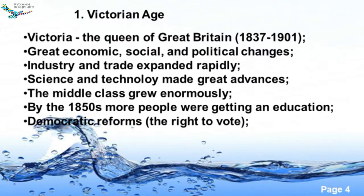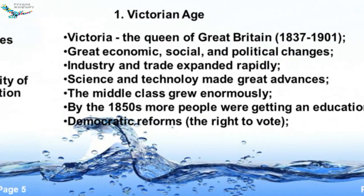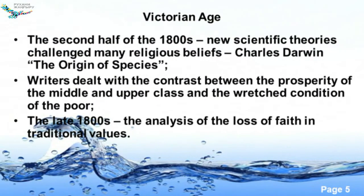By the middle of this period, more people were getting an education and there appeared some new democratic reforms. As for the second half of the 1800s, it is specified with new scientific theories that came into contradiction with many religious beliefs. The example can be Charles Darwin and his book The Origin of Species. As for the literature, writers dealt with the contrast between the prosperity of the middle and upper class and the wretched poor conditions of the lower class, and it influenced the writing with the analysis of the loss of faith in traditional values.